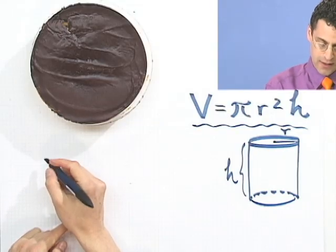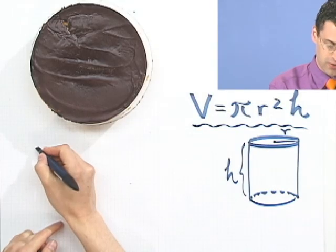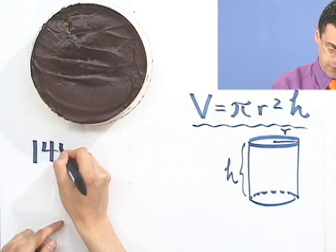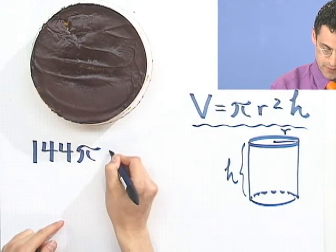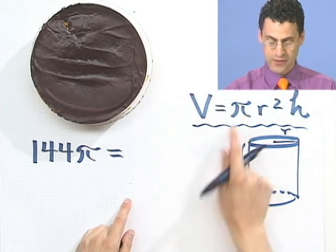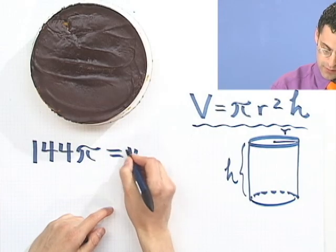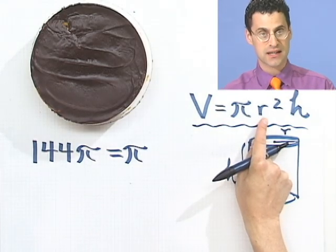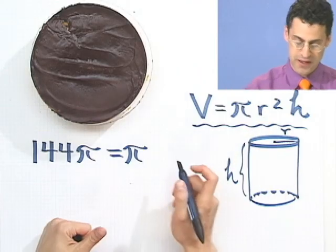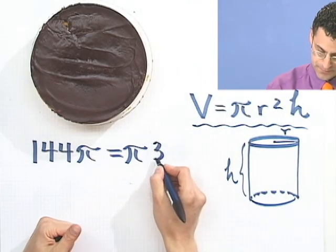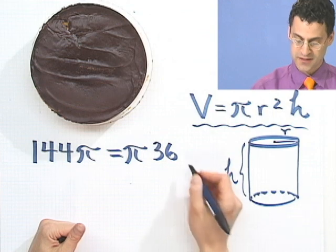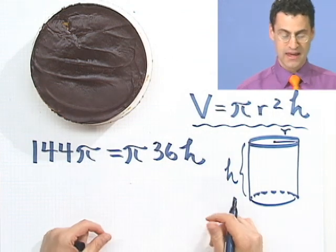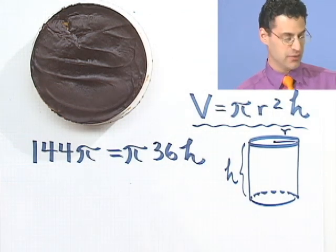What I see here is the following. The volume, which I'm told is 144 times π. Well that's the volume. Now what does it equal? It equals π times r squared. Now r, we're told, is 6. So r squared would be 36 times h. And now the question is, what is h? What is the height?